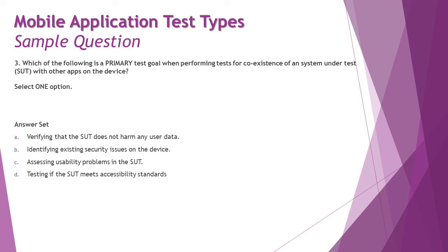Question three: which of the following is a primary test goal when performing tests for coexistence of a system under test with other apps on the device? When an app coexists with competitive or other installed apps, we want to make sure it doesn't cause any problems. Option A is verifying that the SUT does not harm any user data — that's the primary thing to consider for coexistence, because interaction or conflict with other apps can certainly create misbehavior leading to loss of data or information issues.